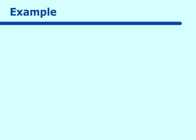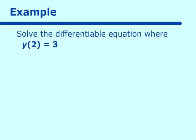Example two: solve the differential equation dy/dx = -x²/y, with y(2) = 3. First, separate the variables: y dy = -x² dx. This is slightly different from the last one — the last one had dy/y, which led to a natural log. This one doesn't.